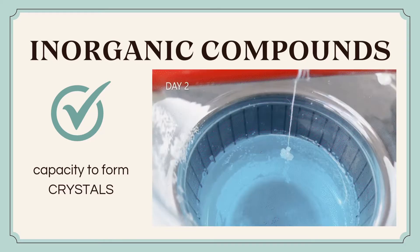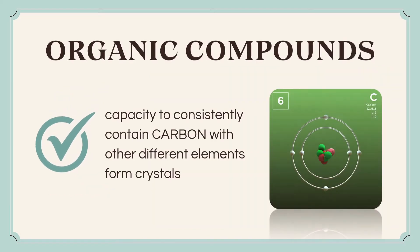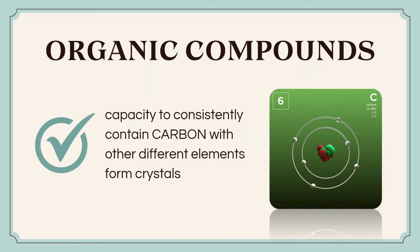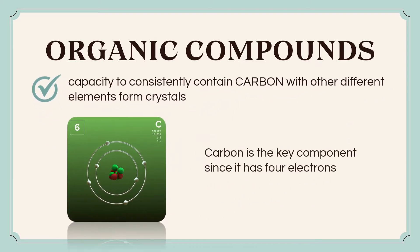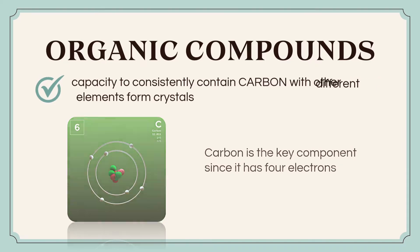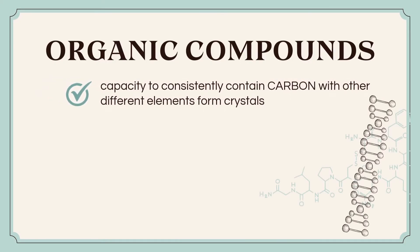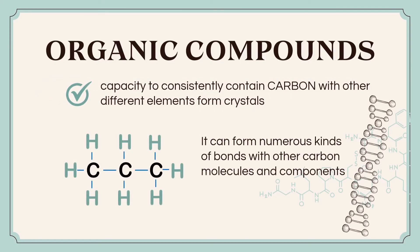On the other hand, organic compounds are groups of compounds that consistently contain carbon with other different elements that are required for living creatures to function. Carbon is the key component since it has four electrons in an outer electron shell that can bond or hold eight electrons, and subsequently it can form numerous kinds of bonds with other carbon molecules and elements.